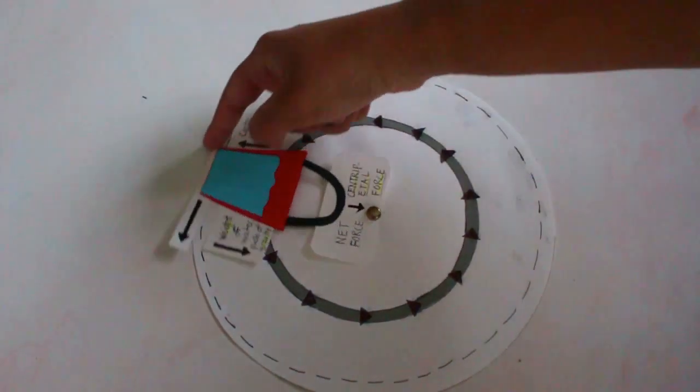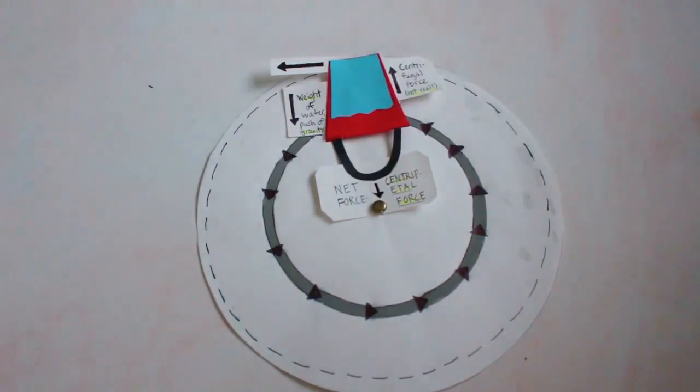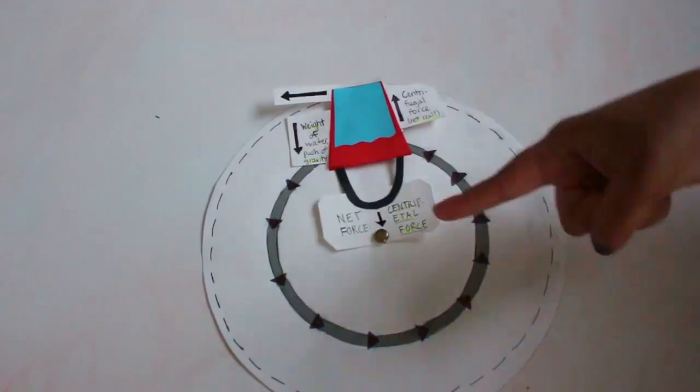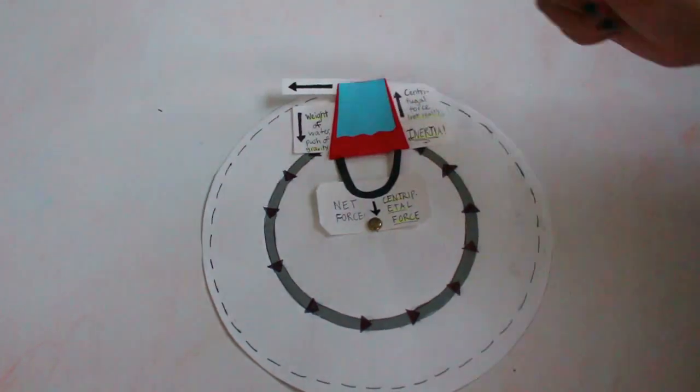Forces should exist from any point of view, but this one only exists from the bucket's perspective as it rotates. Centrifugal force is the equal and opposite reaction to centripetal force, and is actually the effect of inertia, or the tendency of an object to resist a change in its state of rest or motion.